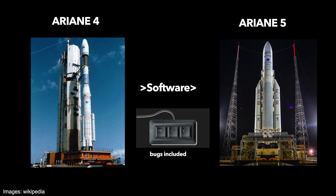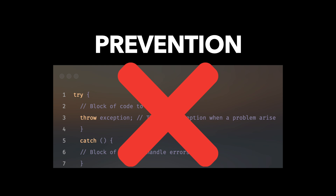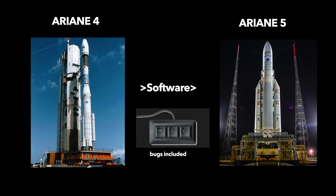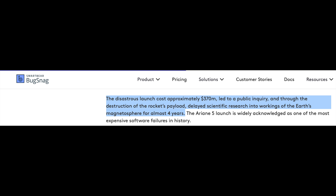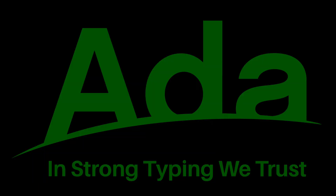The overflowing conversion was a leftover from the Ariane 4 codebase, where it had worked fine. But what makes this worse is that the horizontal bias value wasn't even needed after launch — it could have been omitted entirely. Furthermore, exception checking was disabled for this value due to Ariane 4 performance limits, something Ariane 5 didn't suffer from, but it still ran the same code. The crash cost 370 million dollars and delayed scientific research by almost four years, making it one of the most expensive software failures in history.